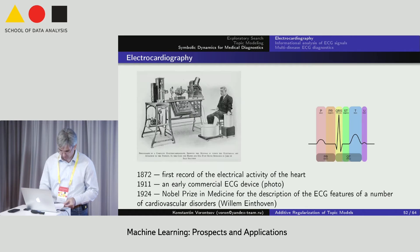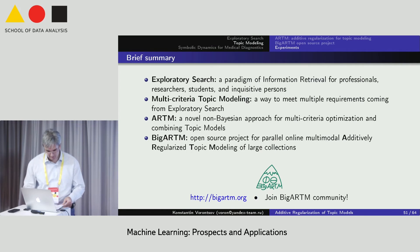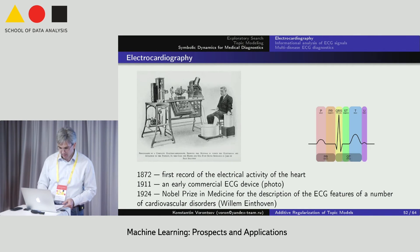This is a brief summary for topic modeling. Exploratory search motivates combining topic models to meet dozens of criteria at once. The state-of-the-art Bayesian approaches are too sophisticated for this purpose. We propose a simple and powerful approach we call ARTM based on additive regularization. We implemented this idea in the open source project BigARTM and we invite everyone to join the project.